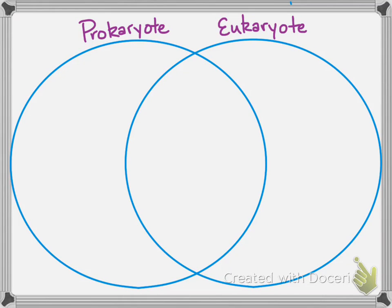A quick recap of prokaryotes and eukaryotes: prokaryotic and eukaryotic cells are the two major cell types. Both types of cells can be unicellular. You'll only see multicellular organisms in the eukaryotic cell type, because they have a little bit more complexity that allows them to build up into multicellular structures like tissues, organs, and organ systems.